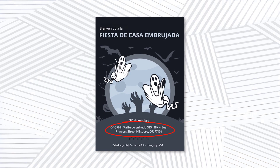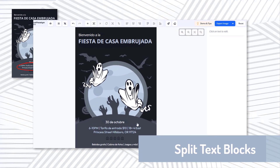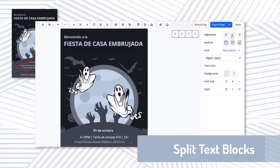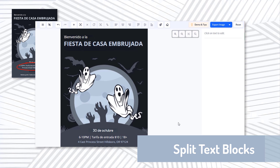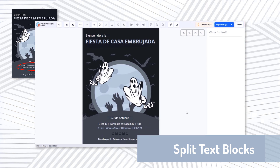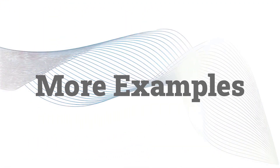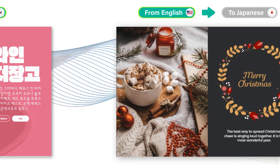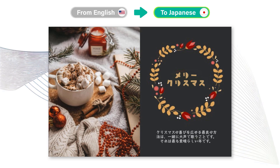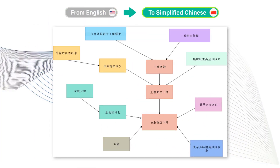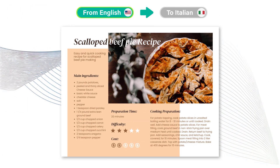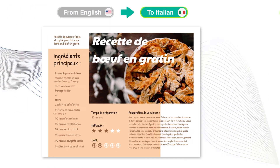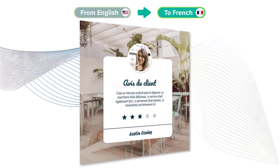If two sentences were mistakenly translated together into one block, select it and press split merged blocks. The text will separate into two blocks, and the color will automatically adjust to match the original design. Let's take a look at more examples of translated images. Try it now and adjust your translated images with Visual Paradigm Online.